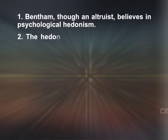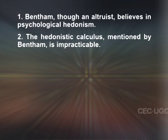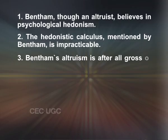Number 2: The hedonistic calculus mentioned by Bentham is impracticable. Pleasure and pain cannot be weighed on the two sides of a balance like material things. The feelings of pleasure and pain are subjective and therefore variable; nothing can be added to or subtracted from them. Number 3: Bentham's altruism is, after all, gross or sensualistic. He has mentioned purity as one of the dimensions of the quantity of pleasure, but the introduction of this dimension has not been able to elevate his doctrine. By purity, he has not meant any superior quality — it only means freedom from pain. There is no qualitative difference among pleasures. Artistic enjoyment and the pleasure of eating sweetmeats are different in kind.